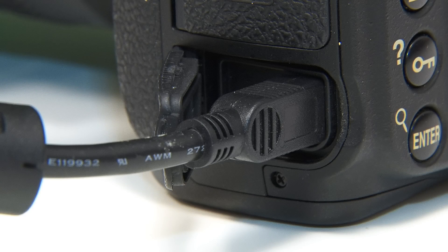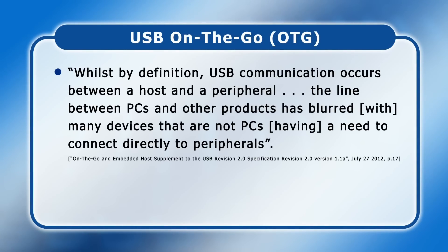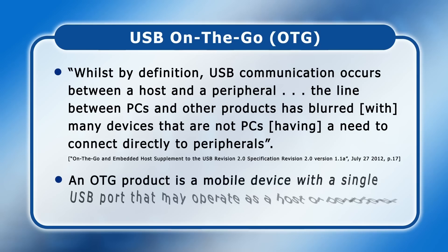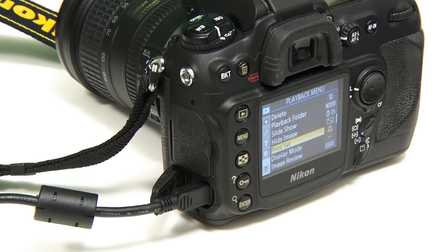Linked to the development of the Mini and Micro connectors was USB On-The-Go, or OTG. First released in 2001, the USB OTG standard notes that whilst USB communication occurs between a host and a peripheral, the line between PCs and other products has blurred, with many devices that are not PCs having a need to connect directly to peripherals. An OTG product was defined as a mobile device with a single USB port that may operate as a host or as a peripheral. For example, a digital camera with an OTG USB port may operate as a host to directly control a printer, but will appear as a peripheral storage device when connected to a PC.